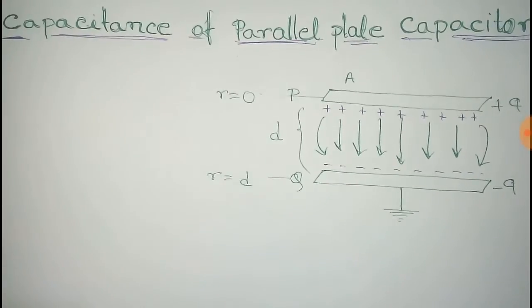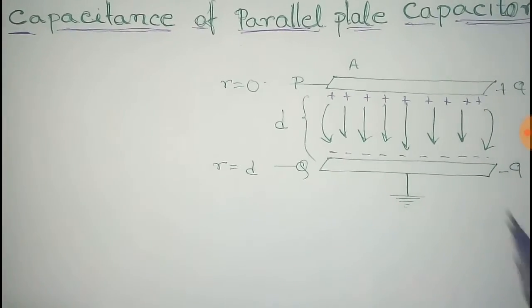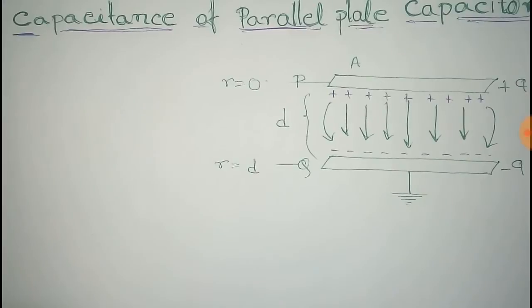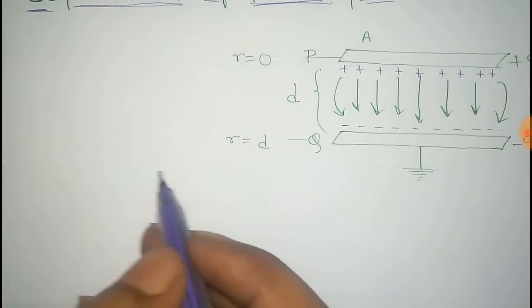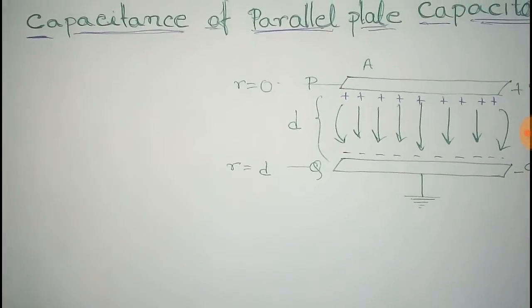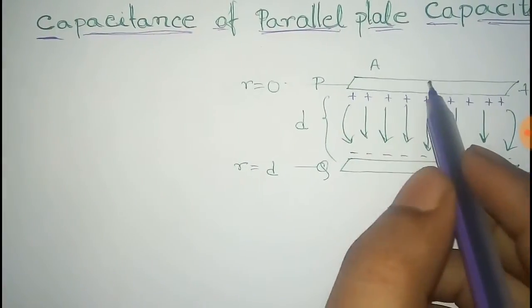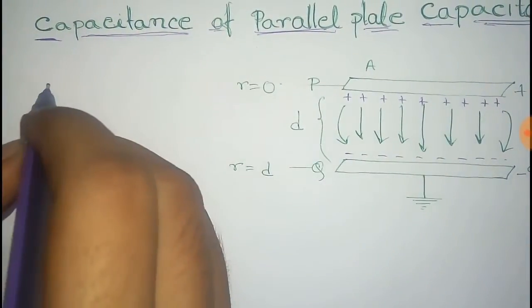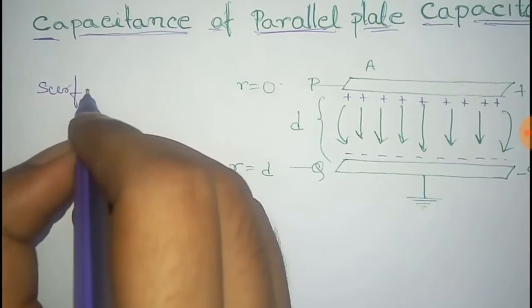And the total charge at the plate P is Q. Then the surface charge density σ for the plate P is Q by area, that is A. So that is surface charge density.